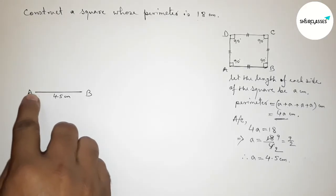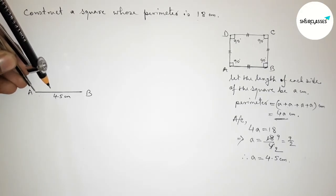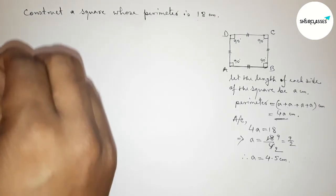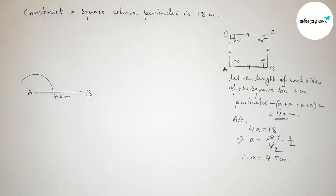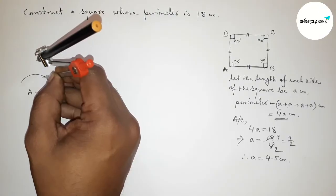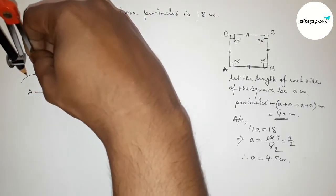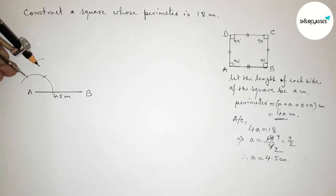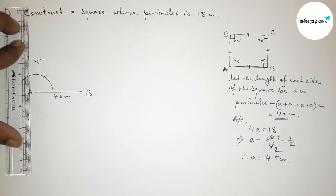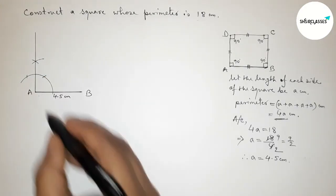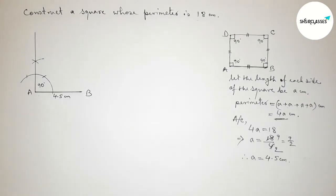Next we have to draw a 90-degree angle at point A. Putting the compass on point A, taking any length and drawing an arc. Then putting the compass at that point, taking the same length and cutting arcs. Joining the line to get a 90-degree angle at A.